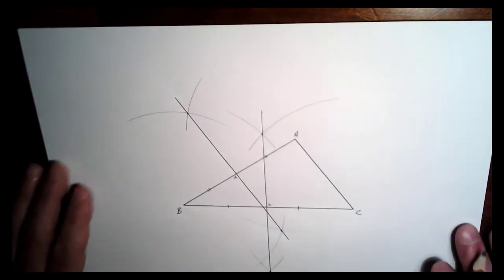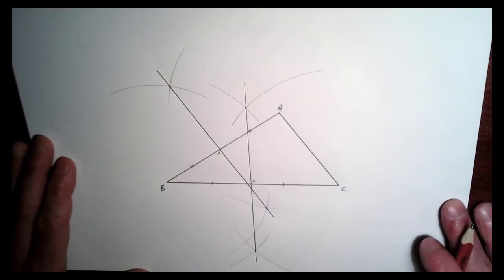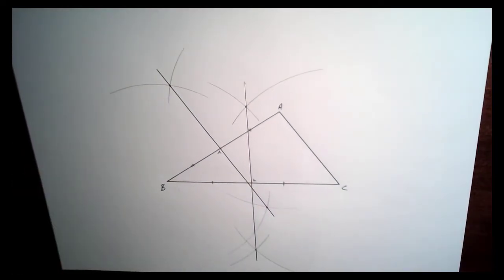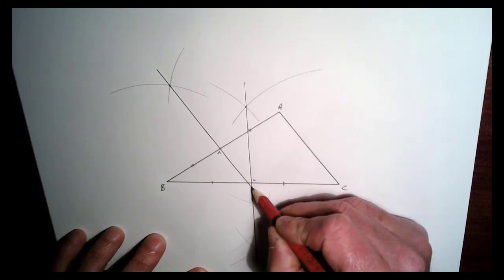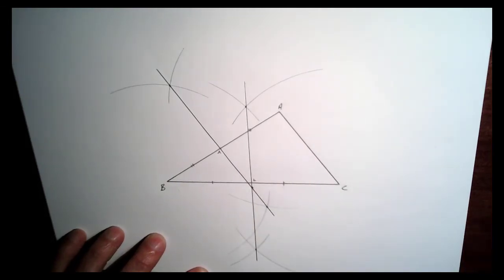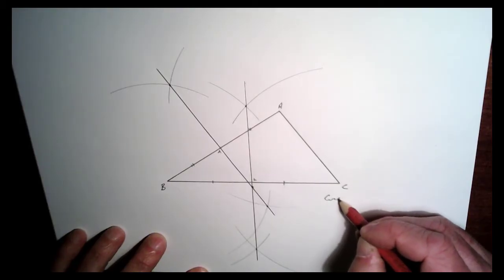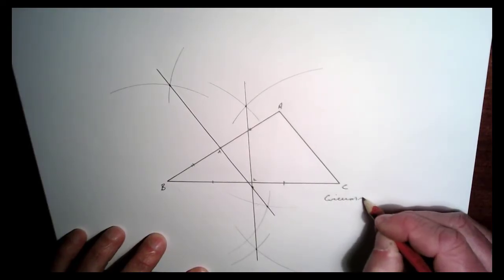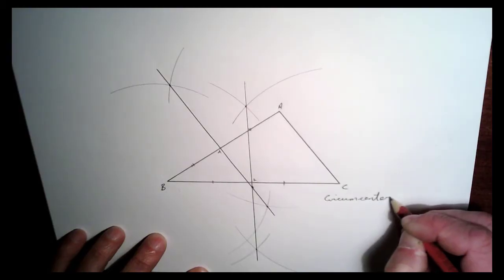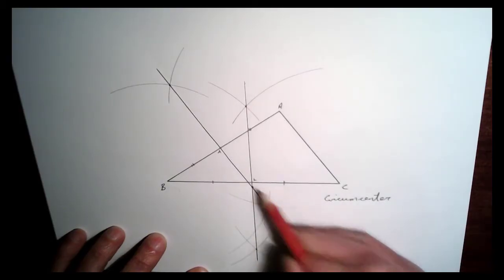Okay, so let's have a look at what we've done. We've constructed two perpendicular bisectors of two sides BC and AB. So where they intersect here, that's called the circumcenter. So that's the circumcenter. This is our circumcenter here.